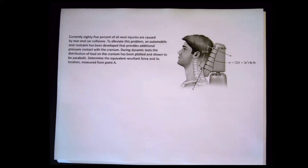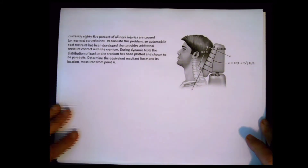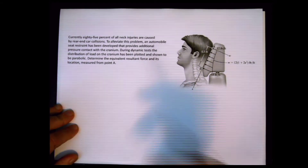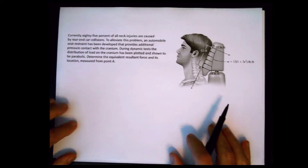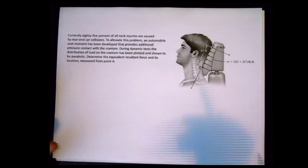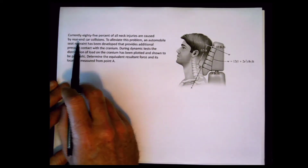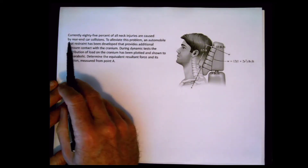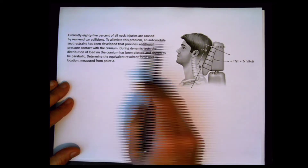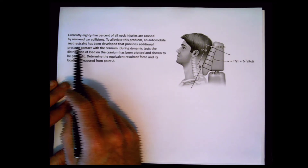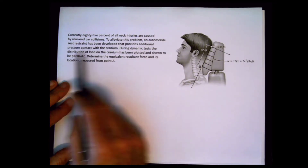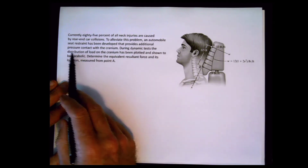Hello again guys, let's check this problem out. This is a really interesting problem because it's relating the material we are learning with biomechanics, body biomechanics. It says currently 85 percent of neck injuries are caused by rear-end collisions. To alleviate this problem, an automobile seat restraint has been developed to provide pressure contact with the cranium, and a dynamic test distribution of the load on the cranium is given.